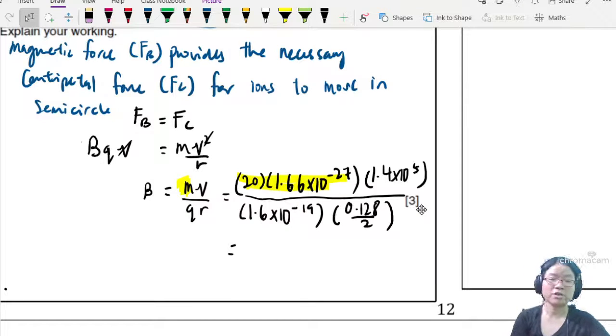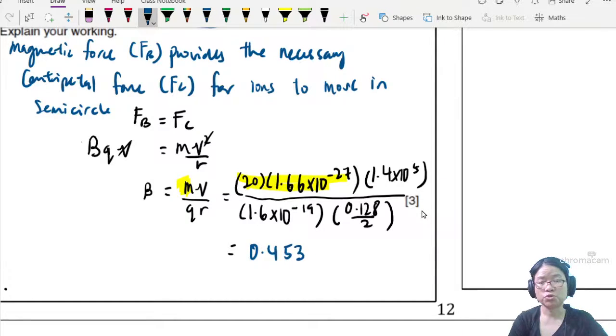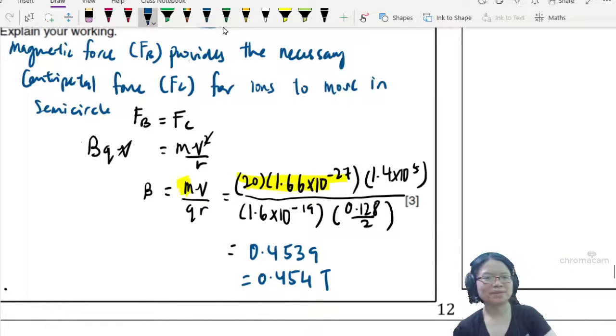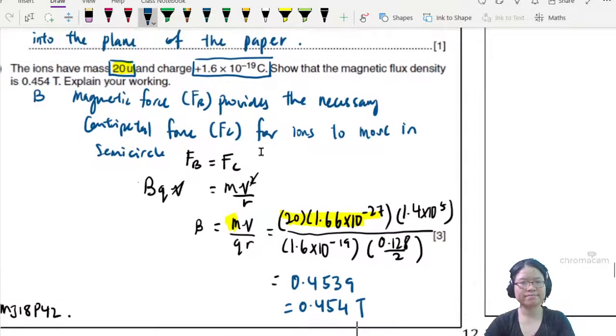After pressing my friend the calculator, this value is 0.4539, which is close to 0.454 Tesla.